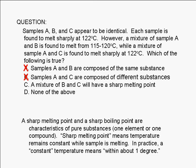Let's look at choice C. Since we have established that A and B are not identical, but A and C are identical, we can conclude that B and C are different. We therefore expect a mixture of B and C to have a wide melting point range. Choice C is also false.